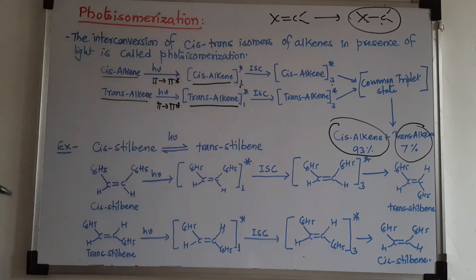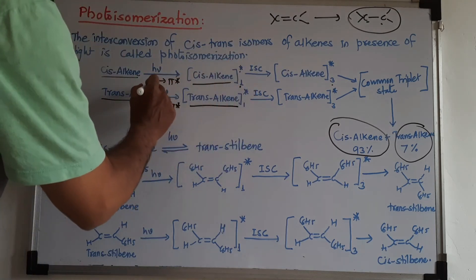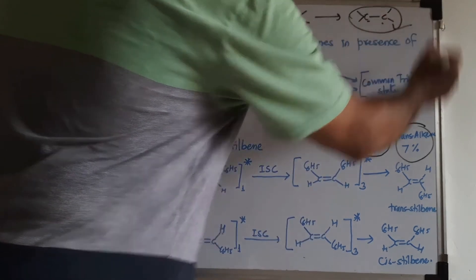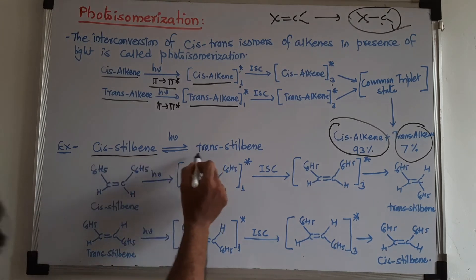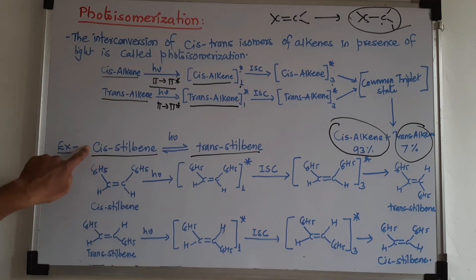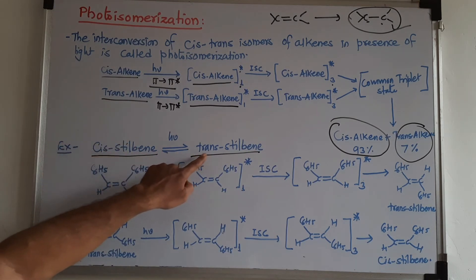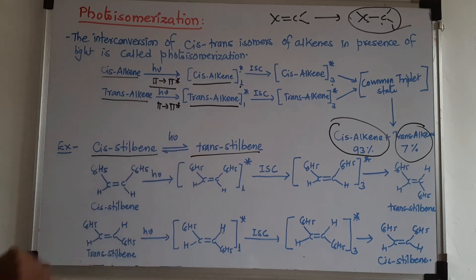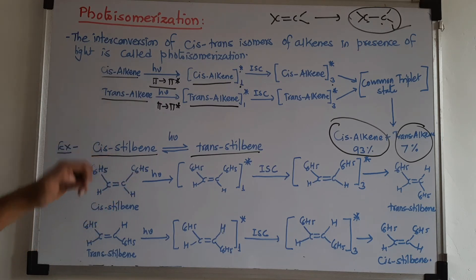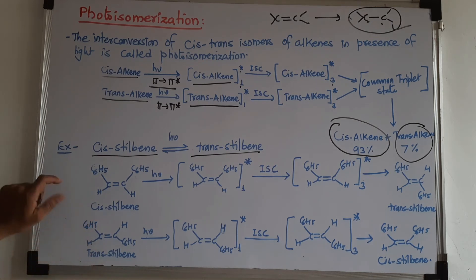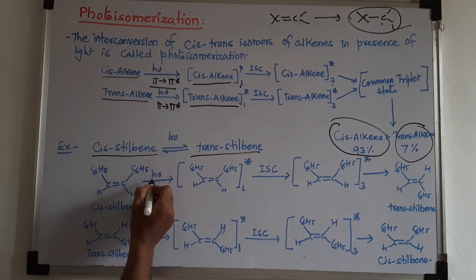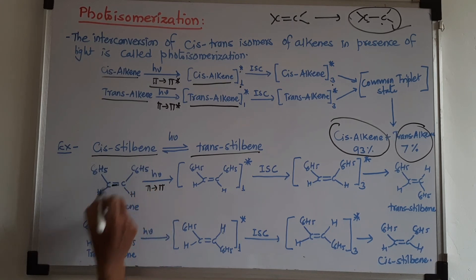To understand this reaction completely, consider the example of stilbene. If we start with cis-stilbene, after this reaction it is converted to trans-stilbene — in fact a mixture is obtained. Cis-stilbene has the structure where similar groups (C6 groups) are on the same side of the double bond, which makes it the cis isomer. Trans-stilbene is the other isomer of this molecule.